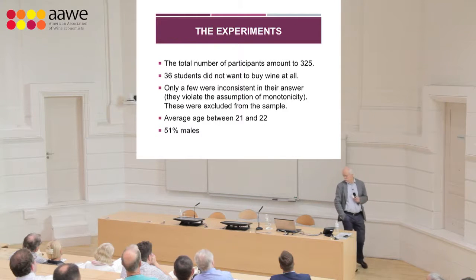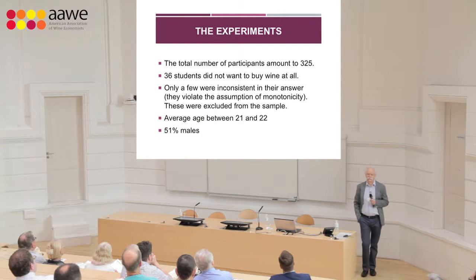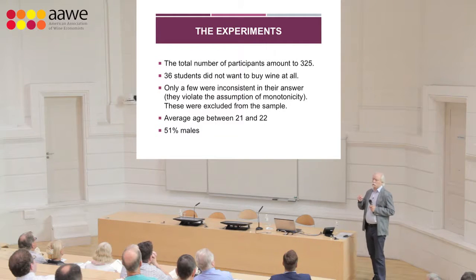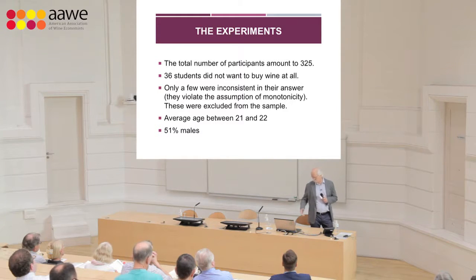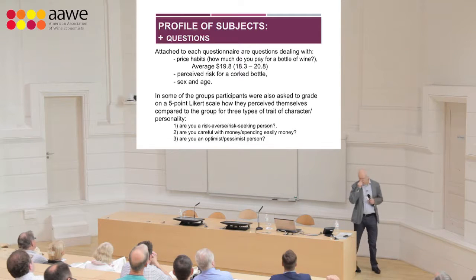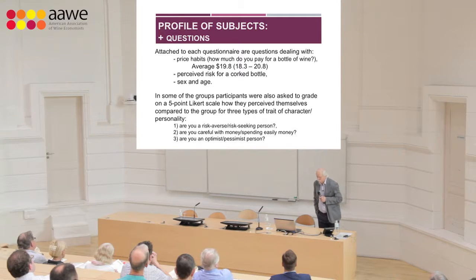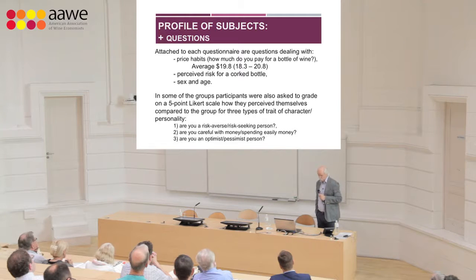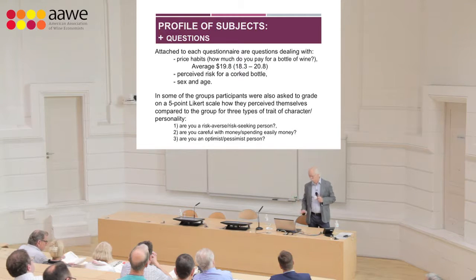The number of participants was 325. Thirty-six students didn't want to buy wine at all. Only a few answers were inconsistent — meaning they did not show a monotonic declining demand curve — so these were dropped. Average age was 21-22, with a roughly 50-50 male-female split. In each questionnaire we asked about price habits (how much students would be willing to pay for a bottle of wine if invited to a party), perceived risk for a corked bottle, sex, age, and questions on trade-off personality to enable robustness checks.